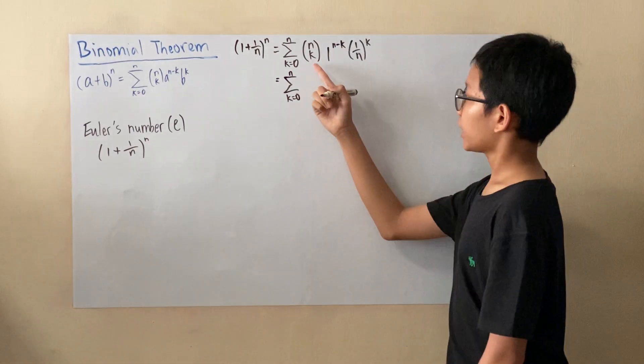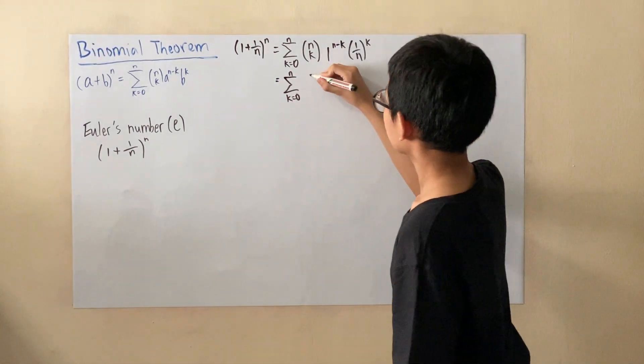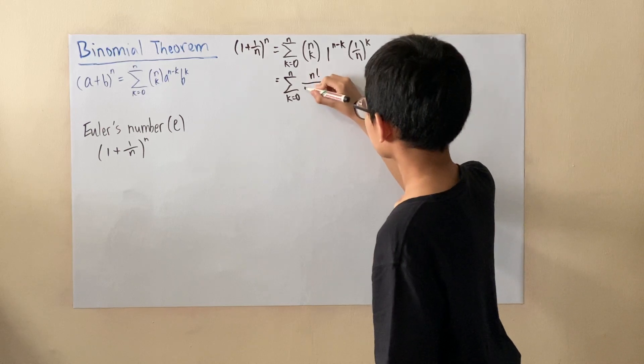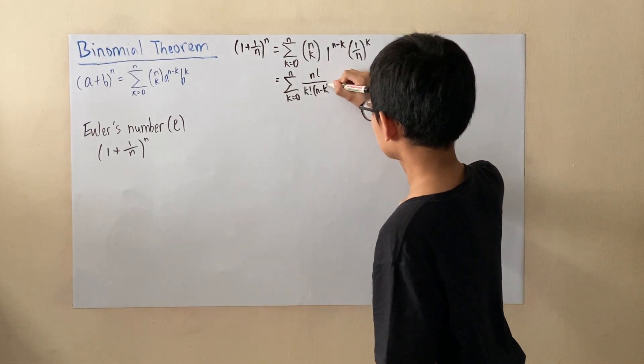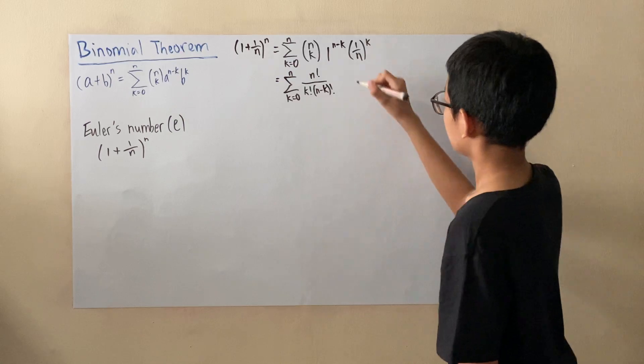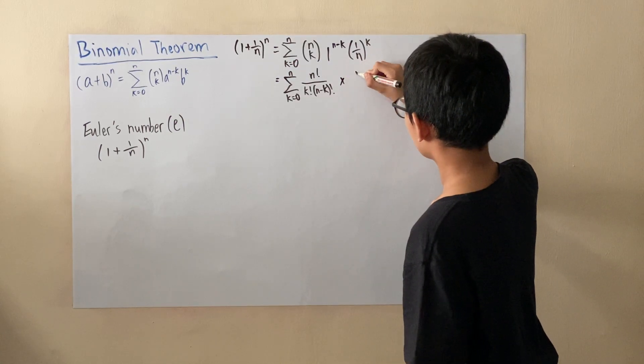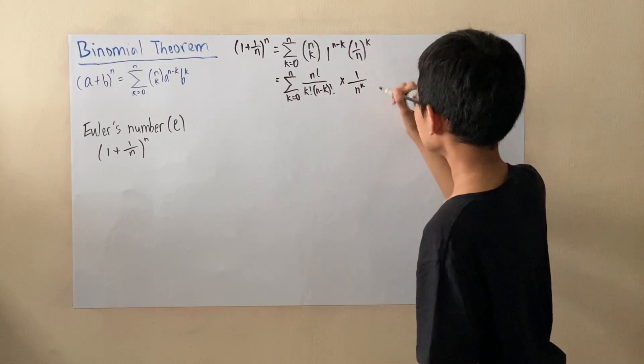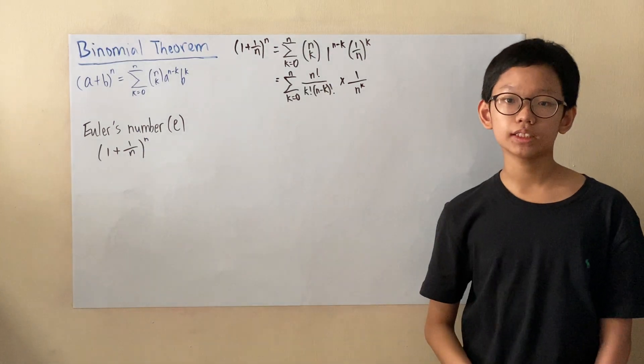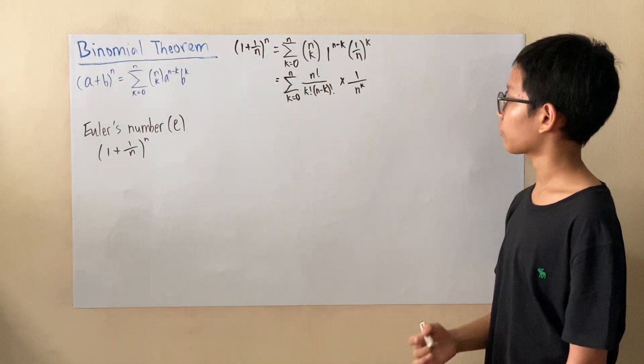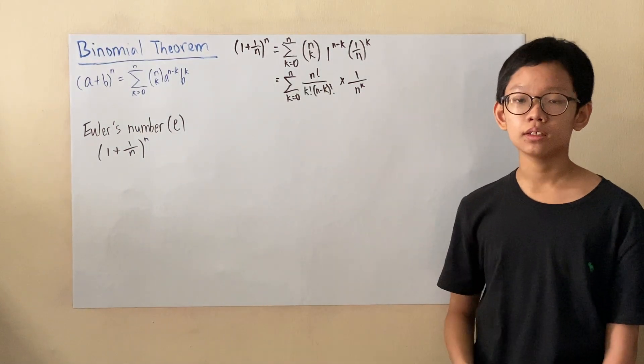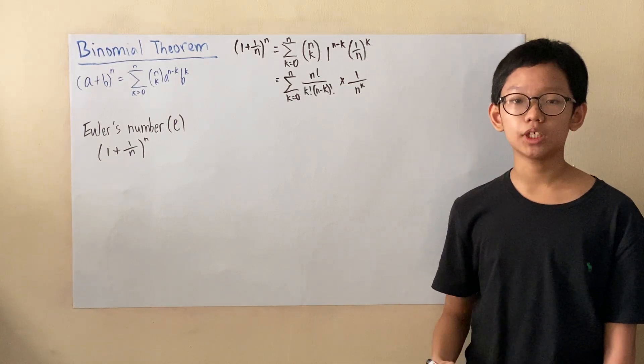And we'll also write n choose k in this way: n factorial over k factorial times (n-k) factorial. And what we'll have left is (1/n)^k because following the laws of indices, what we'll get is 1^k over n^k. However, 1 to the power of any number is always 1.